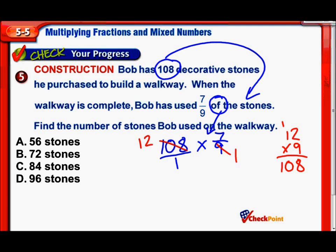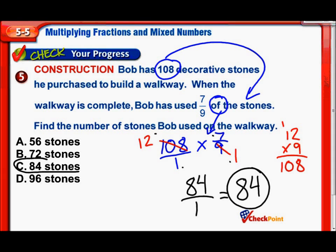Okay. Now, let's just finish things up by multiplying our numerators together and our denominators together. So, we have 12 times our 7 on top. And 12 times 7 is 84. 1 times 1 on the bottom is 1. Oh, and that's an easy finish. 84 divided by 1 is, of course, 84. So, he used 84 of those stones. And there it is. Answer choice C is our number of stones used to make this walkway.